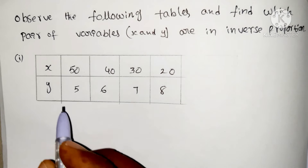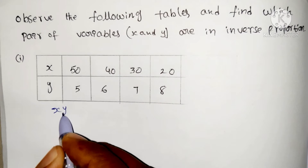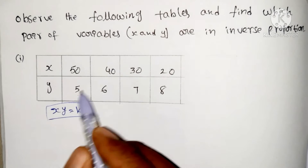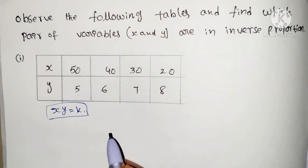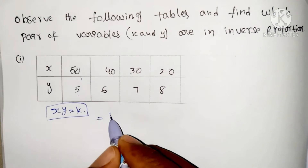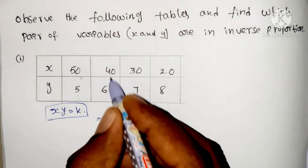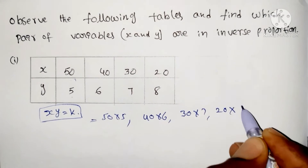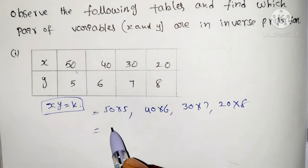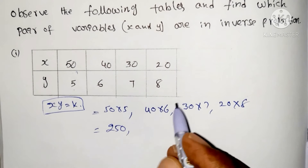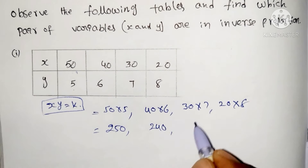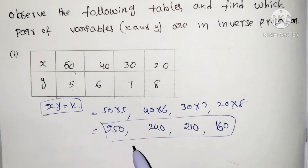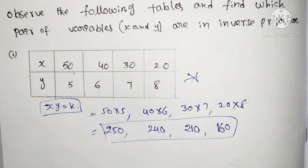We get the constant value by multiplying x and y. For example: x is 50 and y is 5; x is 40 and y is 6; x is 30 and y is 7; x is 20 and y is 8. Calculating: 50×5 = 250, 40×6 = 240, 30×7 = 210, 20×8 = 160. Since the products are not equal, these values are not in inverse proportion.